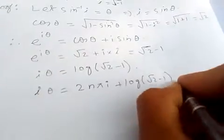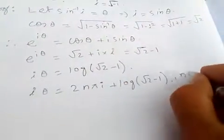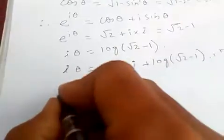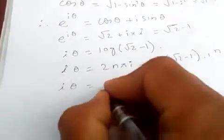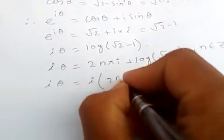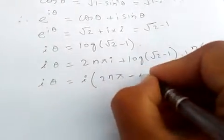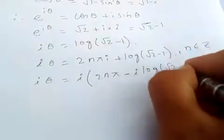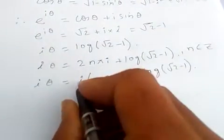Plus log of root 2 minus 1, where n is just an integer. So i theta is equal to, if I take i common, 2nπ minus i log of root 2 minus 1.